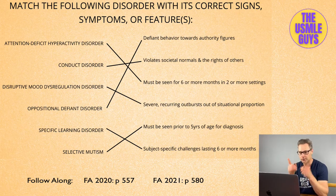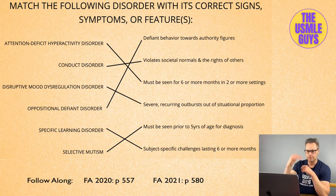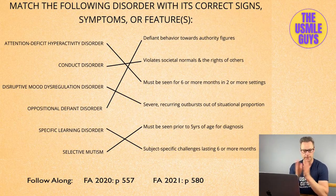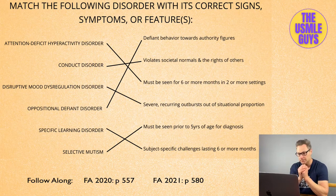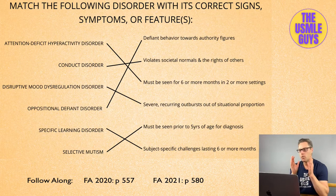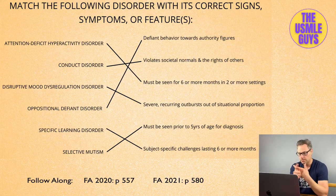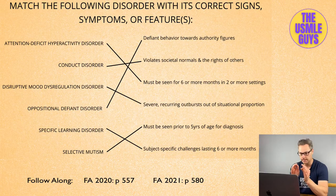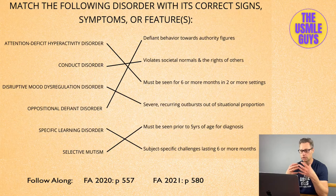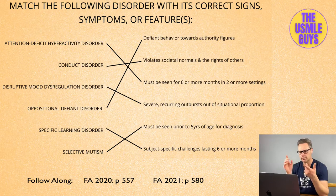If you take a look at your books, let's go down the list from top to bottom. First, let's start with ADHD. This is a condition characterized by a limited attention span and/or poor impulse control. In order to make a diagnosis, you need to see this: A, before 12 years of age; B, for six or more months; and C, in two or more settings. For the sake of our exams, just remember those big factors: before 12, six or more months, two or more settings.